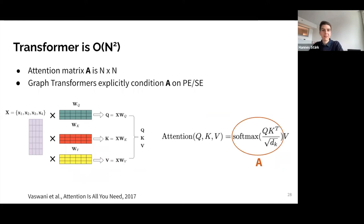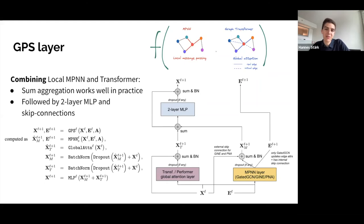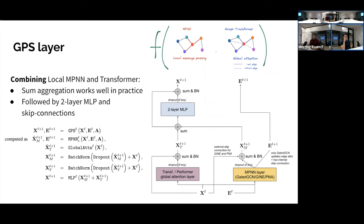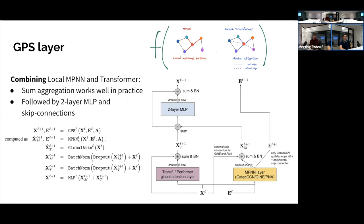Question: are there any disadvantages of using message passing layers in between? When using just a single layer, we don't run into over-smoothing or over-squashing issues — the global attention is still there. Technically, the global attention can over-smooth the signal, since within one layer you can take an average of all nodes in the graph, similar to how a transformer can smooth the signal in fewer layers.